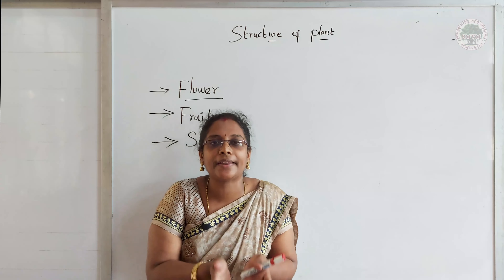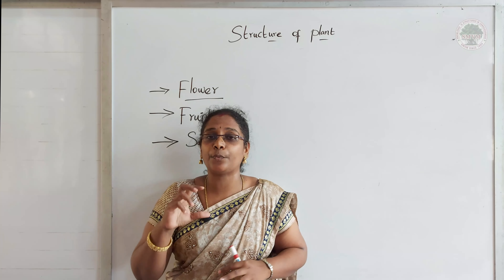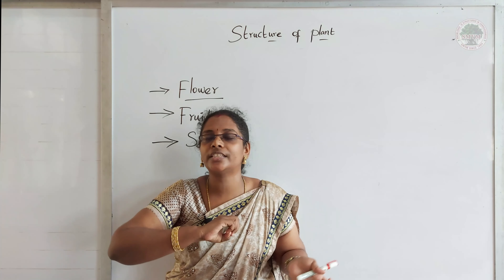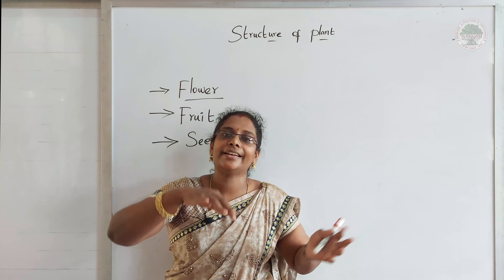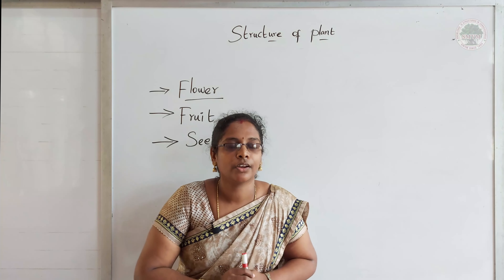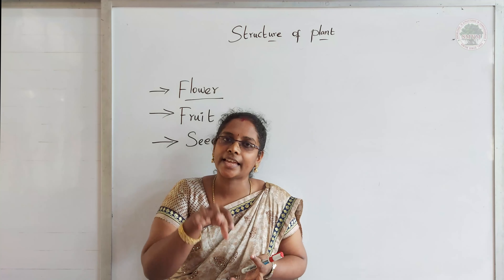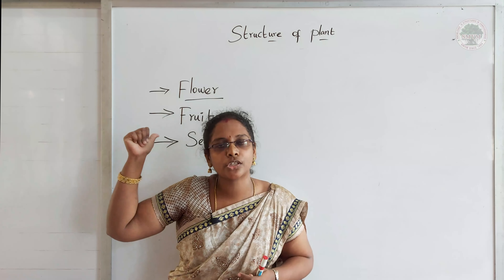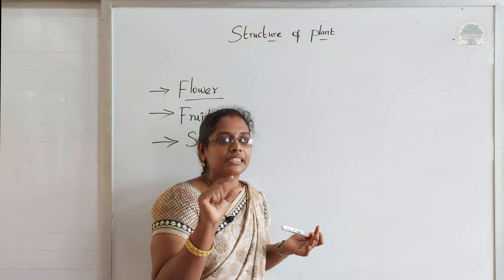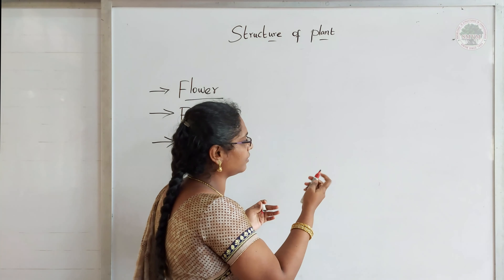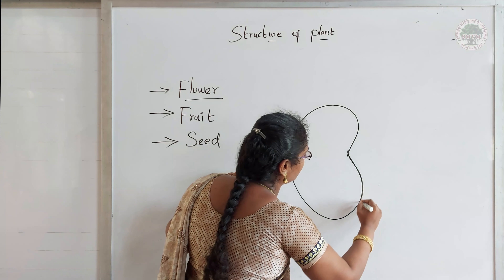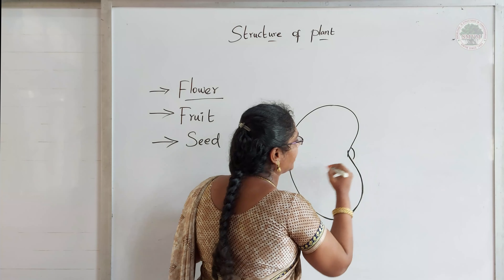What is fruit? From the flower, the fruit is being produced. Fruit is the tastiest part of the plant. Why are fruits very tasty? Because inside the fruit we can see a seed, and the seed has to get dispersed from one place to another place. If it is very tasty, the animals that eat the fruit will throw the seed somewhere else, and from there a new plant grows. That is why fruits are very tasty. Inside the fruit we can see a seed, and the seed is also a reproductive part.